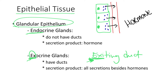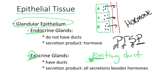When we think of endocrine glands, a helpful mnemonic is PTSP. This stands for: parathyroid gland, thyroid gland, suprarenal gland, and the very famous pituitary gland.